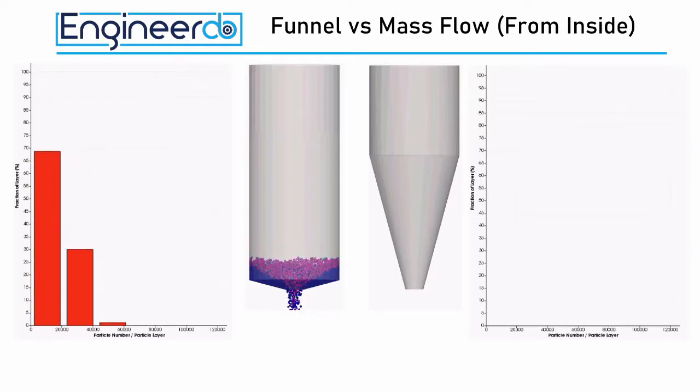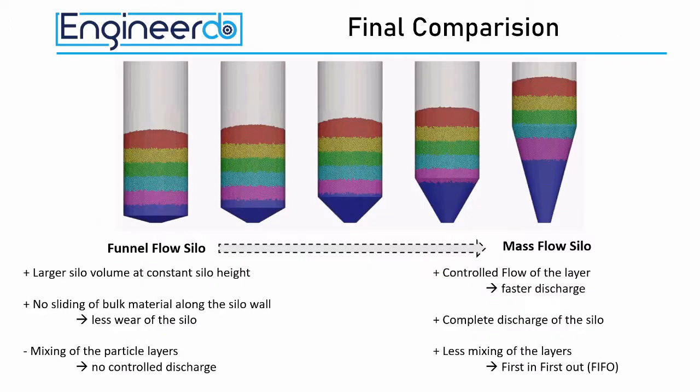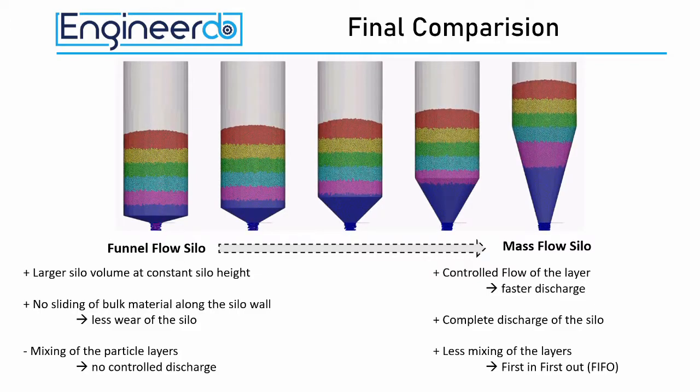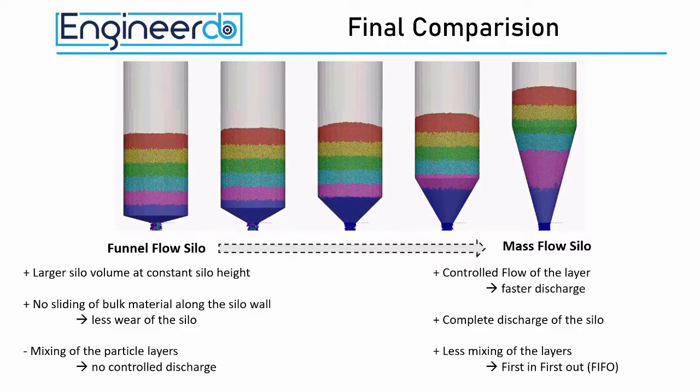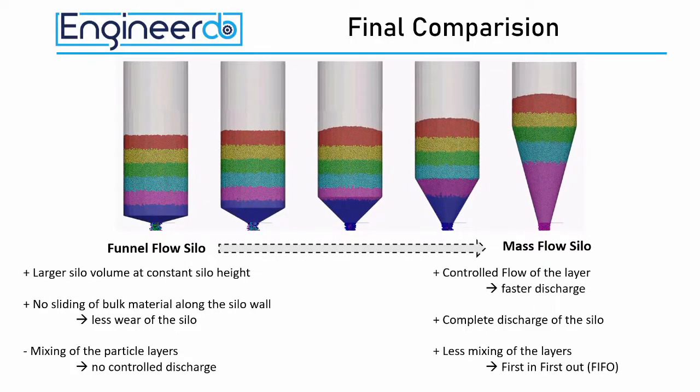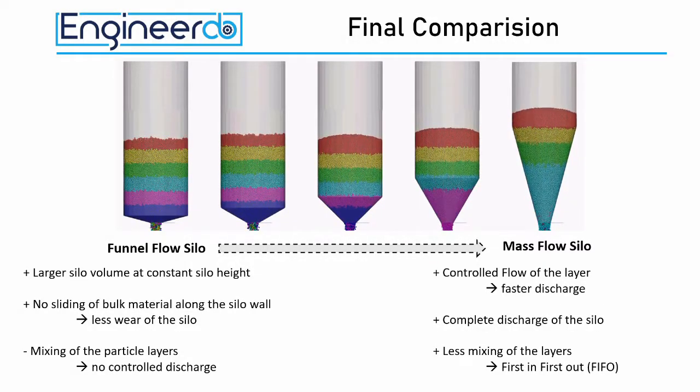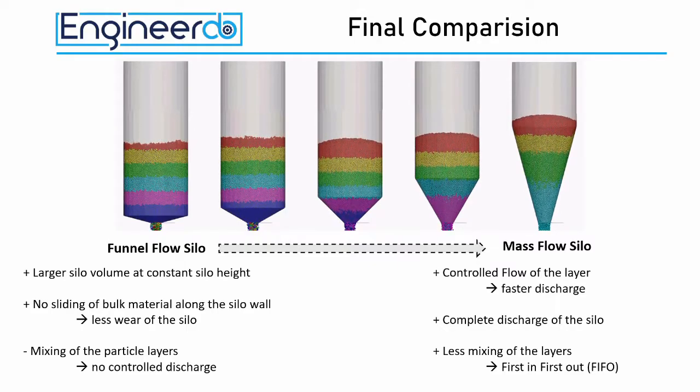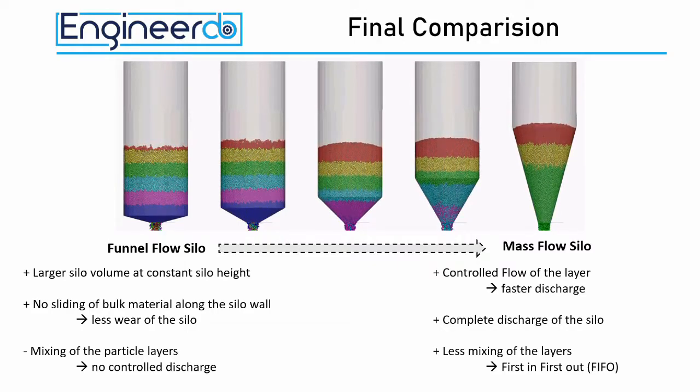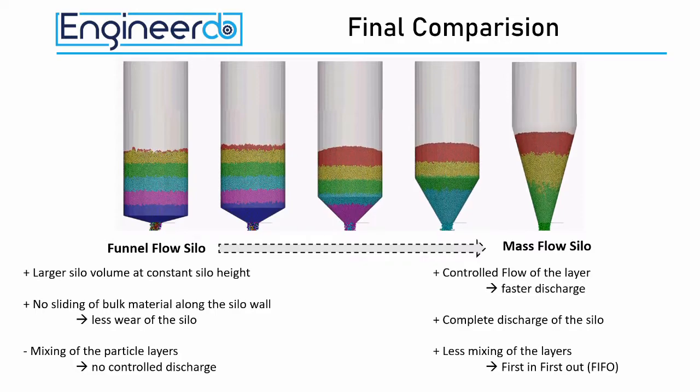In the final comparison we can summarize the results of this simple case study on silo designs using the discrete element method. In the filling process we could see that the funnel flow silo have a higher capacity at constant silo height. This is the reason why this design is most common in industrial storage of big amount of bulk materials, like cereals or grains.